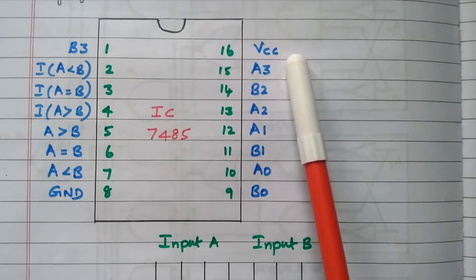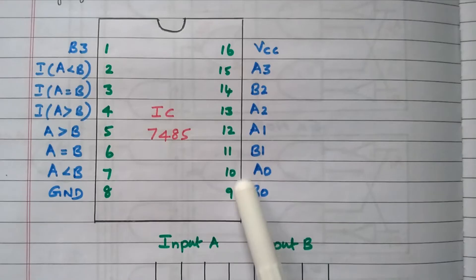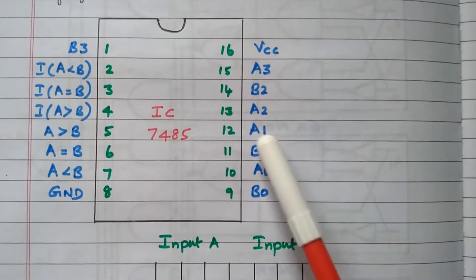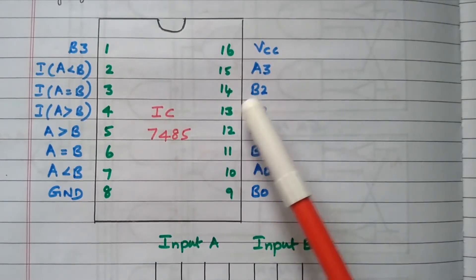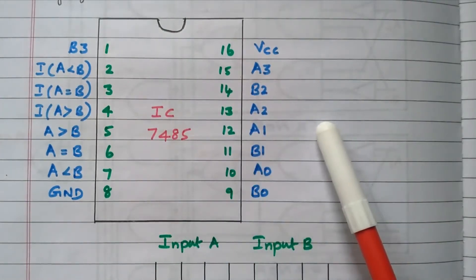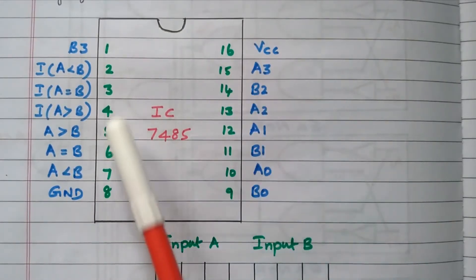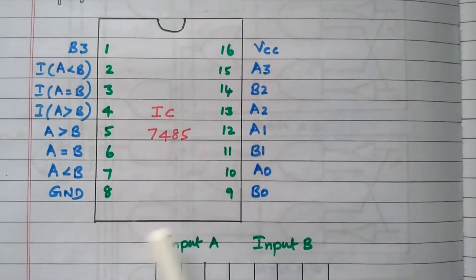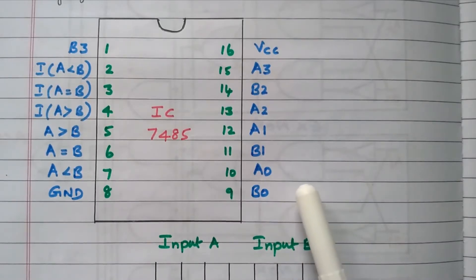Now we will see the four input bits. A0 and B0 are available at pin numbers 10 and 9. A1 and B1 are at pin numbers 12 and 11. A2 and B2 are at pin numbers 14 and 13. A3 is at pin 15 and B3 is at pin 1. So pins 8 and 16 are ground and VCC; pins 2, 3, 4 are cascade inputs; pins 5, 6, 7 are outputs; and the remaining pins carry the four bits of number A (A0–A3) and number B (B0–B3).